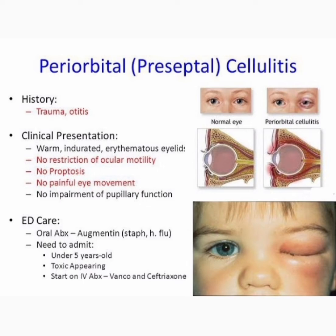Again, periorbital or preseptal cellulitis — look at the image on the right side: normal eye, and periorbital cellulitis. Below that is orbital cellulitis. The source can be any trauma or otitis.